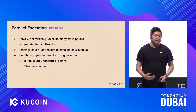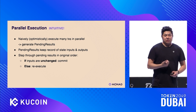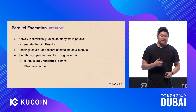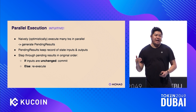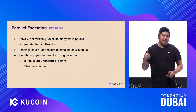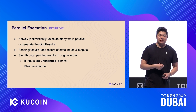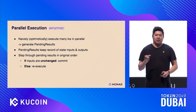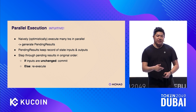Optimistic parallel execution is the idea of running many transactions in parallel as if they were starting from the same starting point, generating a bunch of pending results. Each pending result is a list of the inputs and outputs for that transaction. We generate all these pending results simultaneously, then step through them in the original order of the transactions. For each pending result we look at the inputs — if those inputs are unchanged since the point when they were executed, we commit that result; if they've changed, we re-execute.